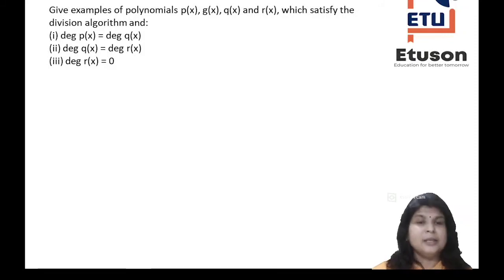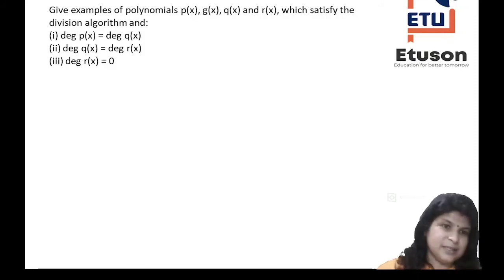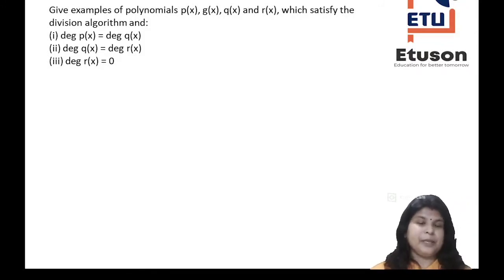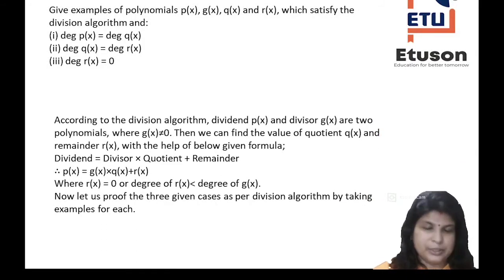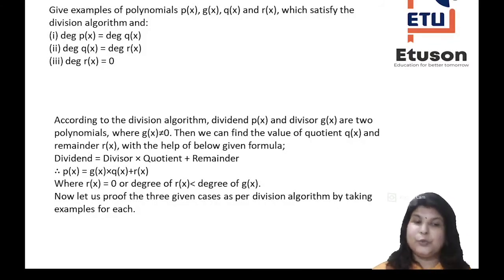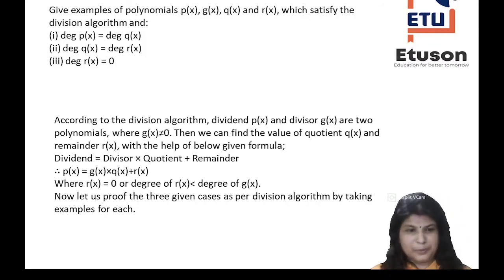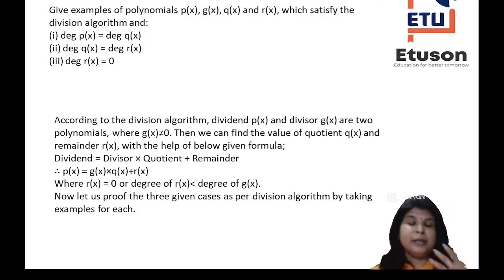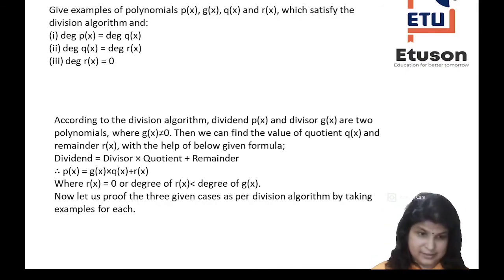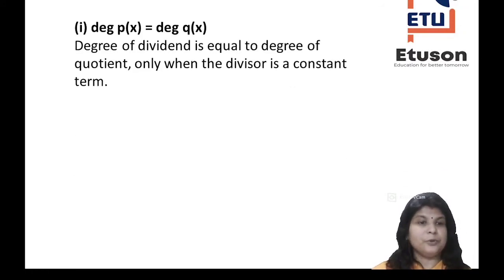Question 5: Give examples of polynomials p(x), g(x), q(x), and r(x) which satisfy the division algorithm. According to the division algorithm, dividend = divisor × quotient + remainder, where the degree of remainder is less than the degree of divisor, or remainder equals 0. We need to prove three cases: the first is when the degree of p(x) equals the degree of q(x).